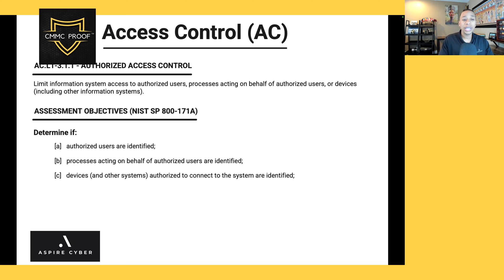Devices and other systems authorized to connect to the system must also be identified. We can leverage Microsoft Intune — a mobile device management tool native to Microsoft 365. All mobile devices accessing our network, whether laptops or phones, are enrolled in Intune. We fill up the list of authorized devices that can access Microsoft 365 and make sure there are no rogue devices — only authorized devices enrolled and centrally managed by Intune.